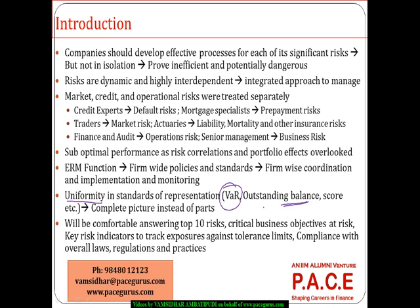Any senior manager receiving a risk report should be comfortable addressing a few simple questions: What are the top 10 risks in my company? What are the critical business objectives that are at risk? Am I going away from targets on any of my objectives? And do I know what my key risk indicators are?